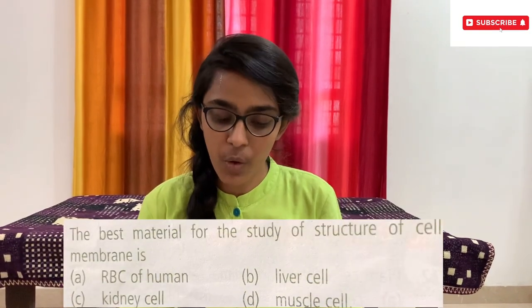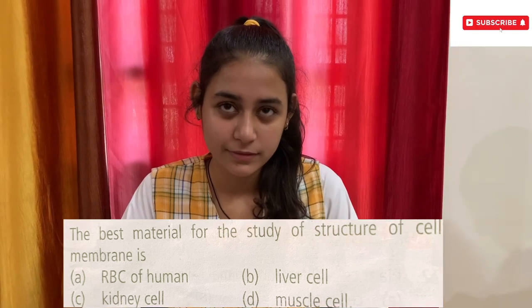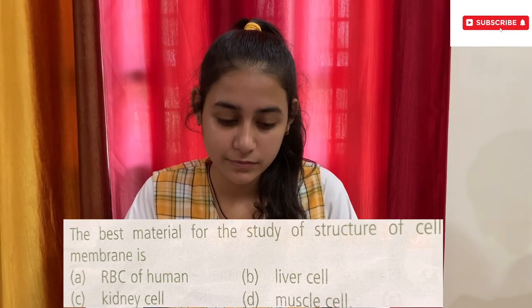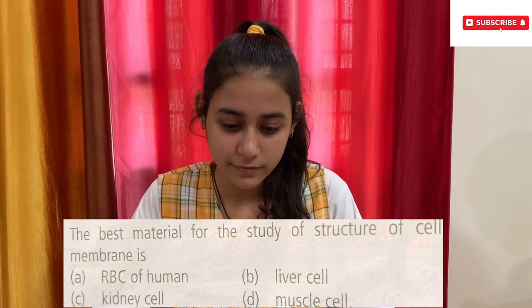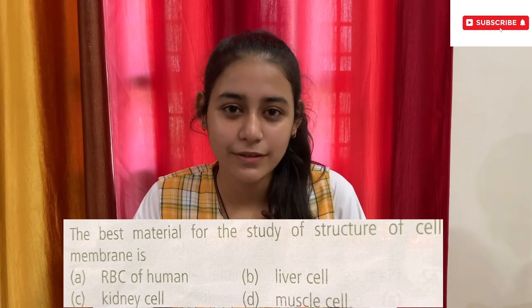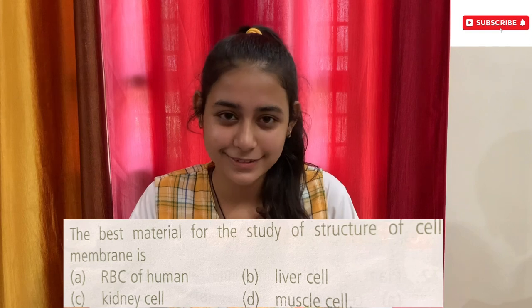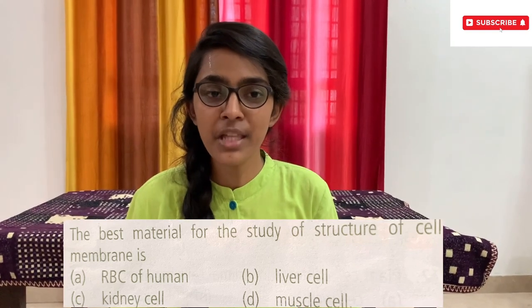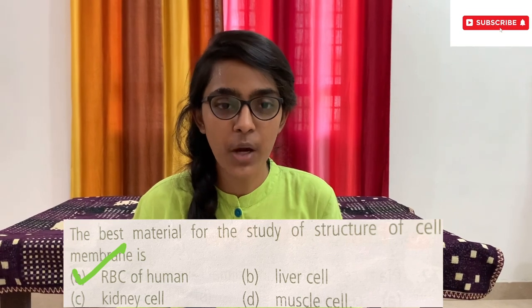The next question goes to Simran. The best material for the study of structure of cell membrane is — options: A) RBC of human, B) Liver cell, C) Kidney cell, D) Muscle cell. Option A, RBC of human. Are you sure? Yes. Option A, RBC of human, is the correct answer. Give her a huge round of applause!